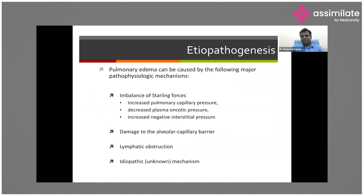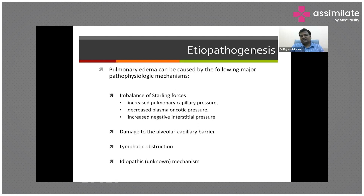What are the causes of pulmonary edema? Pulmonary edema can be caused by the following major pathophysiological mechanisms. First, imbalance of Starling forces — which we have read in our MBBS. This includes increased pulmonary capillary pressure: anything which increases pulmonary capillary pressure, like increased cardiac output in thyrotoxicosis or tachycardia. Also decreased plasma oncotic pressure like hypoalbuminemia, or increased negative interstitial pressure, as seen in re-expansion pulmonary edema.